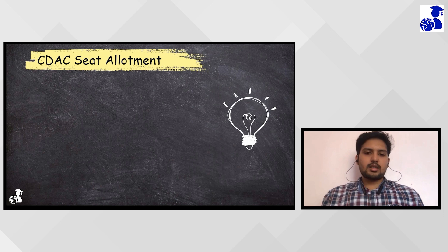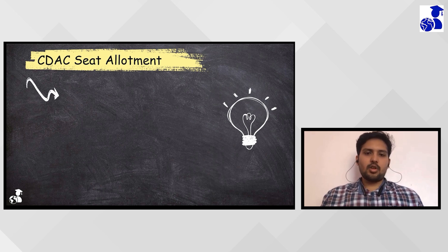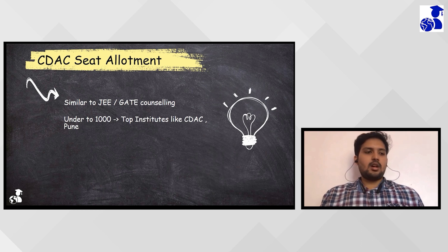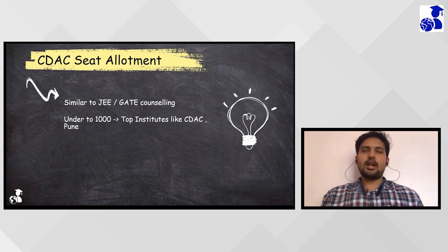It works exactly like other allotment processes such as GATE or NEET allotment — on the basis of your rank. The better rank you get, the more premier institutes you'll get into. If you get a rank in the top 1000, you'll get the best institutes and have many options.